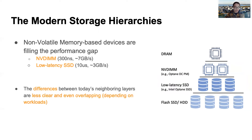Within the modern hierarchy, we observe that the differences between today's neighboring layers are much less clear compared to traditional hierarchies. For instance, looking at popular pairs of devices such as DRAM over NVM DIMM, NVM DIMM over low-latency SSD, and comparing low-latency SSD with conventional NAND flash SSDs — according to our quantification, the minimum performance difference across device pairs today is usually less than three times, and sometimes the performance of neighboring devices can actually overlap.